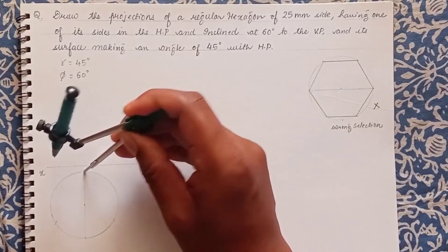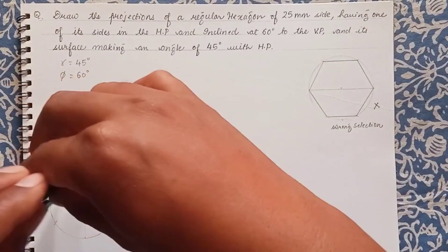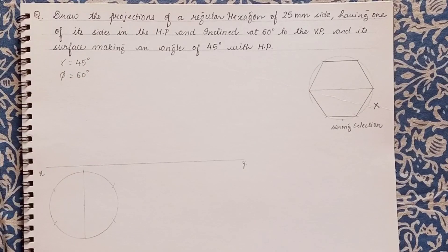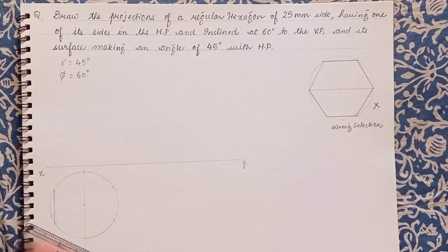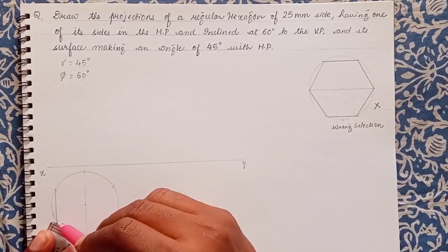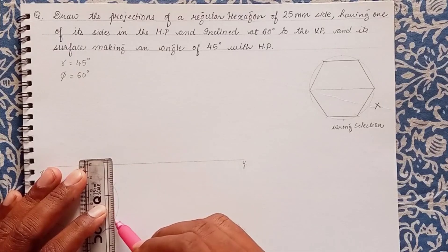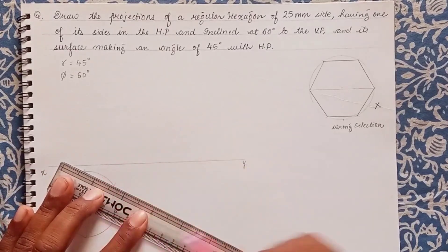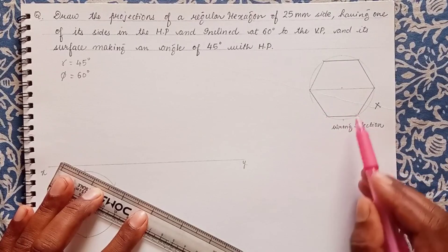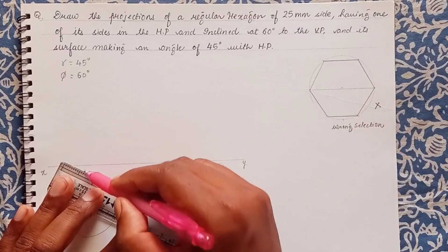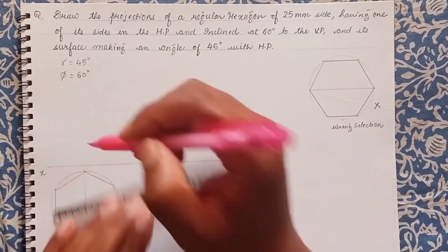With the help of this point we will have an arc here and a second arc here, then we connect the points to get a hexagon. We have drawn this orientation because the question mentions that a side is in HP. If the corner were in HP, we would make a different hexagon orientation. Many students approach the problem and make the wrong hexagon in the top view — this is a very common mistake. Please avoid it.